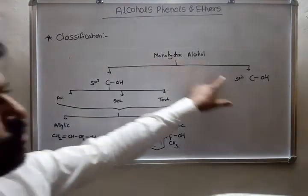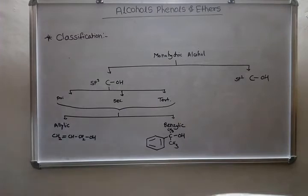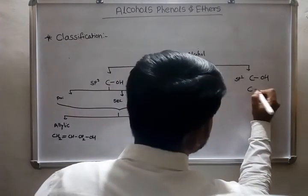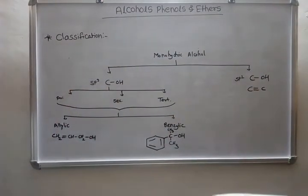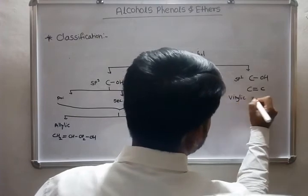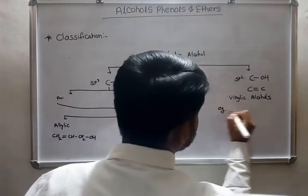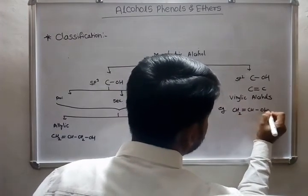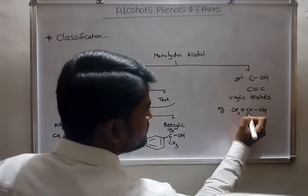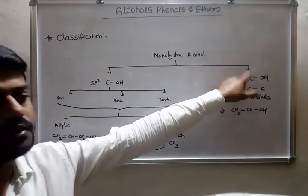The second type of monohydric alcohol is the sp2 carbon–hydroxyl bond — also called vinylic or phenylic alcohols. In these alcohols, the hydroxyl group is attached to an sp2 hybridized carbon atom which is part of a carbon–carbon double bond. For example, CH2=CH–OH: this carbon is sp2 hybridized and directly attached to the hydroxyl group. These are the phenylic or vinylic alcohols.